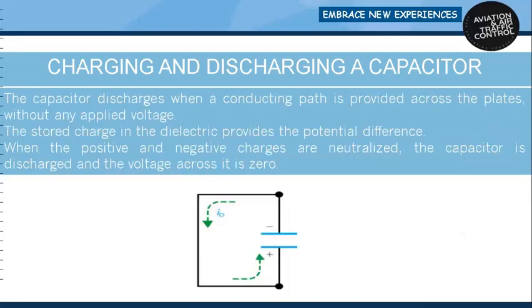The capacitor discharges when a conducting path is provided across the plates without any applied voltage. The stored charge in the dielectric provides the potential difference. When the positive and negative charges are neutralized, the capacitor is discharged and the voltage across the capacitor equals zero.